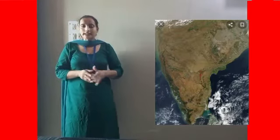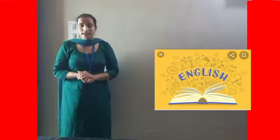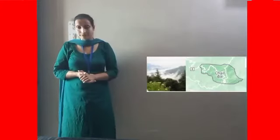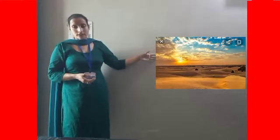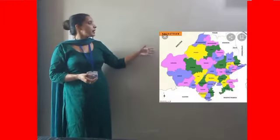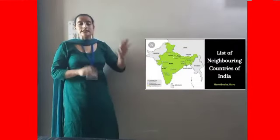India is the second largest English-speaking nation. The highest cricket ground in the world is also in India, located in Chail, Himachal Pradesh. The Great Indian Desert covers the largest part of Rajasthan. India shares its border with seven countries.